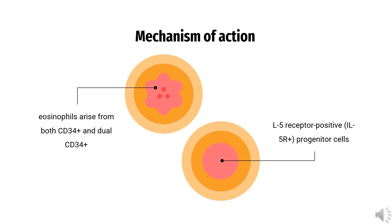Eosinophils are known to play a central role in the pathophysiology of many patients with asthma. Upon activation, eosinophils release leukotrienes, platelet activation factor, major basic protein, eosinophil cationic protein, eosinophil peroxidase, eosinophil-derived neurotoxin, and other cytokines that are cytotoxic to the bronchial epithelium and lead to airway inflammation and bronchospasm.